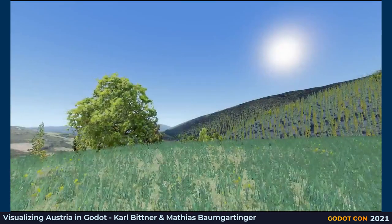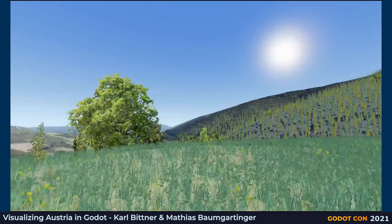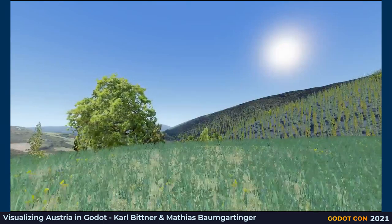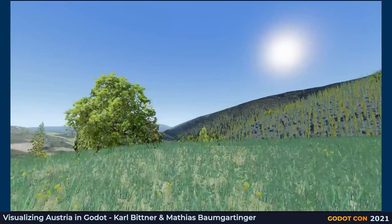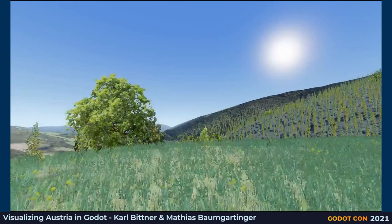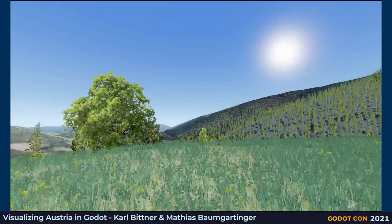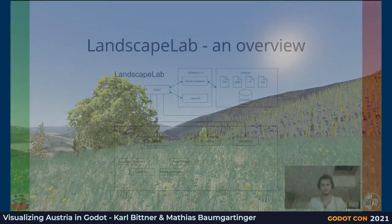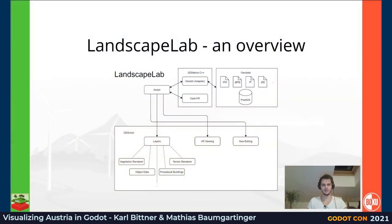Before we go into detail, this is how our landscape visualization looks. In this footage, a small area in Austria called Burgenland is depicted. You could move around to explore the entirety of Austria if you have the required data. The depicted result is the product of three iterations with lots of learning and testing. In the process, many different architectures and methods for loading geodata were examined.